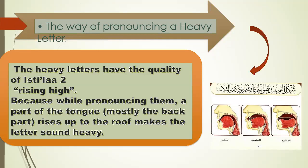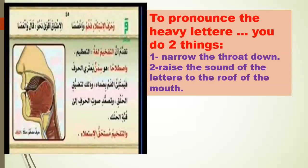This makes the letters sound heavy. To pronounce a heavy letter, you do two things: narrow the throat down — when you say khaa, khaa, the throat is narrowing down — and raise the sound of the letter to the roof of the mouth. Say khaa, not khaa.